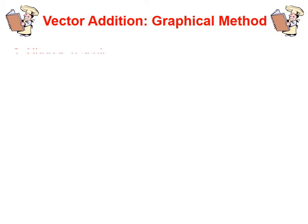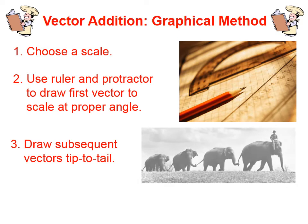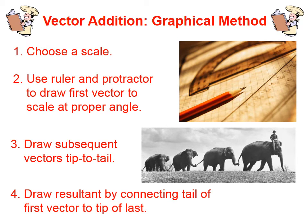We're going to learn first the graphical method of vector addition. The first thing you want to do is choose a scale with which to add your vectors. Then you'll use a ruler and a protractor to draw the first vector to scale at the proper angle. You'll draw subsequent vectors tip to tail. In other words, wherever the first vector ended, that's where the second vector will begin. And finally, we draw the resultant by connecting the tail of the first vector to the tip of the last. In other words, we're going to go back to where we started and draw a vector to where we ended, and that will be our resultant vector.